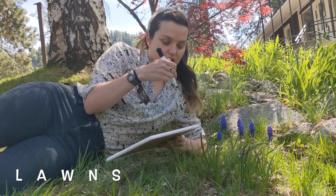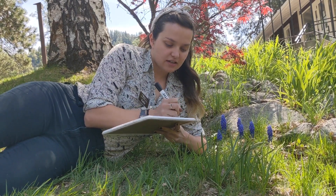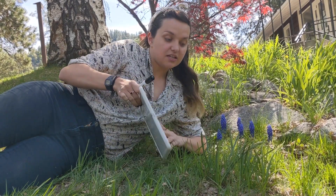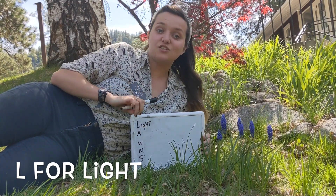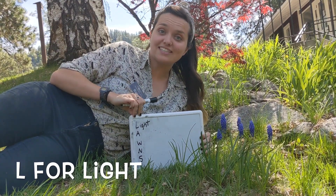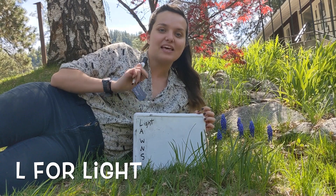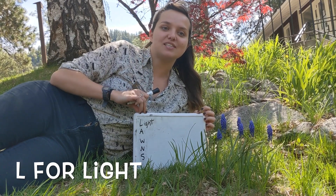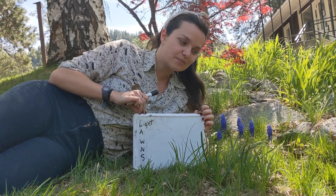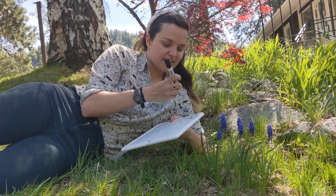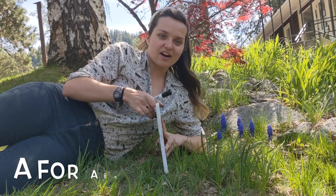We can think about: does this plant have enough light? Just like we need to stay warm, plants need a warm temperature as well. Light keeps plants warm and helps make food for the plants. The next letter is A for air.